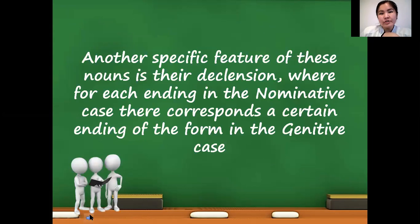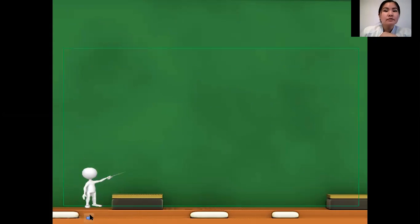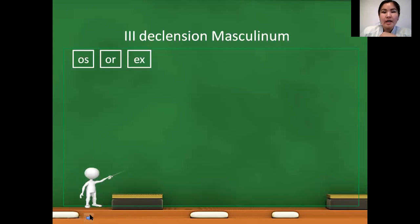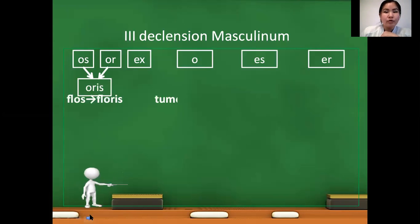One more specific feature of third declension nouns is the form of construction of genitivus, where for each nominativus ending corresponds some specific genitivus ending. And today we are going to discuss how to construct genitivus form of third declension nouns and which endings are common to these nouns. So first, third declension masculine nouns. For this group of nouns endings OS, OR, EX, O, ES, and ER are common. For constructing genitivus, OS and OR we change to oris, for example flos to floris, tumor to tumoris. EX we change to icis like pollex to pollicis.